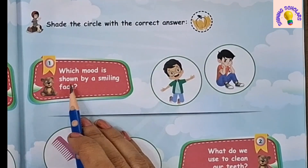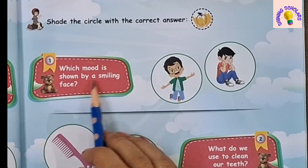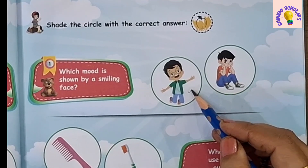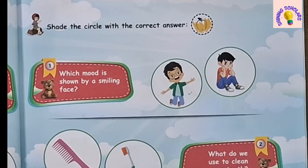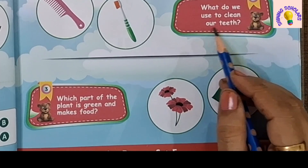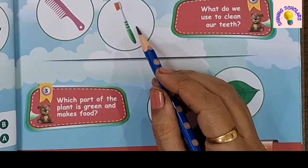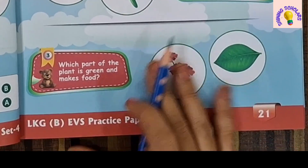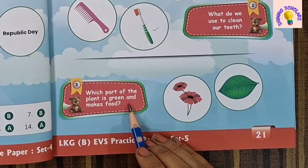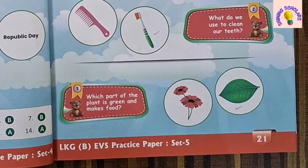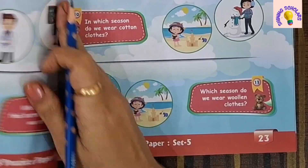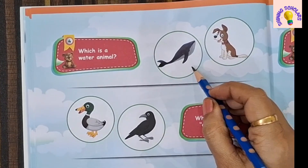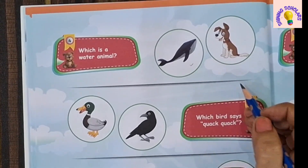Set 5. First question: Which mood is shown by a smiling face? This picture shows the smiling face. What do we use to clean our teeth? We brush our teeth with a toothbrush, not a comb. Which part of the plant is green and makes food? Leaf. Next question: Which is a water animal? This shark is a water animal.